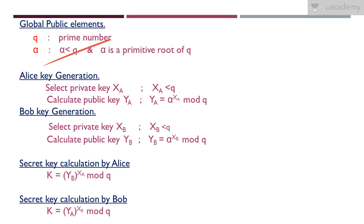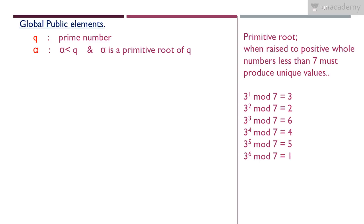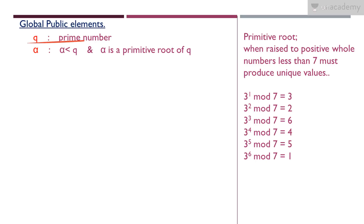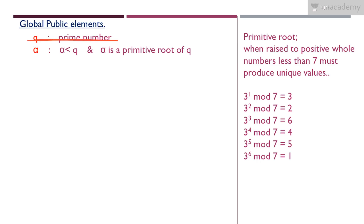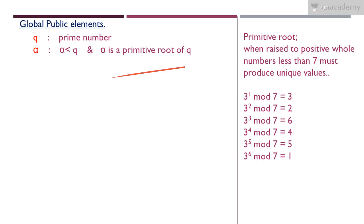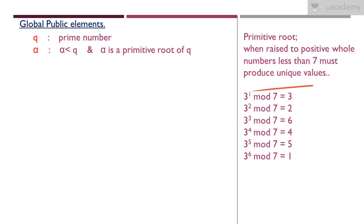The Diffie-Hellman algorithm first requires getting the global public elements q and alpha. Then Alice generates her key, Bob generates his key, and both users calculate the secret key. For q, there is one condition: q must be a prime number. For alpha, there are two conditions: alpha must be less than q, and alpha must be a primitive root of q. Primitive root means if you take all values as powers of alpha mod q, you must get different or unique values.